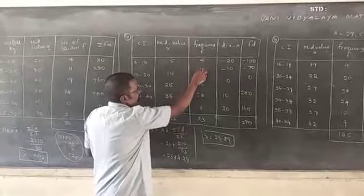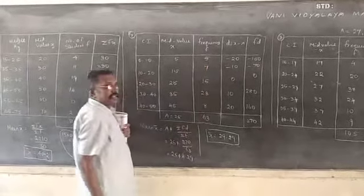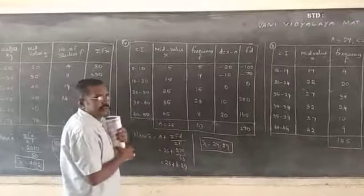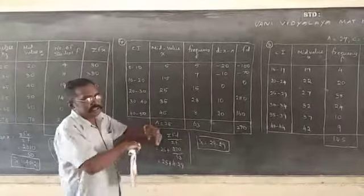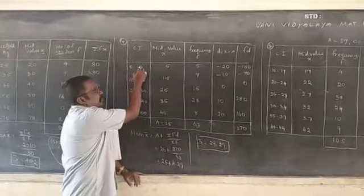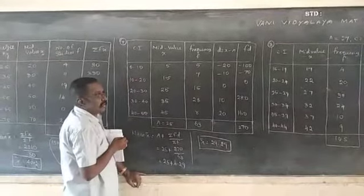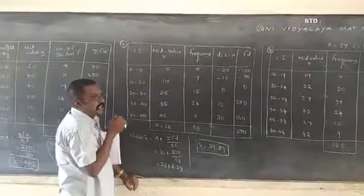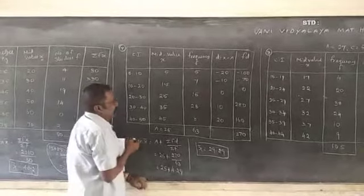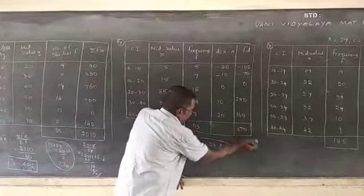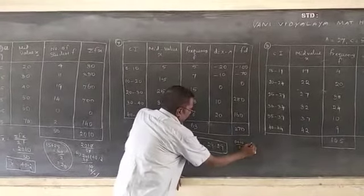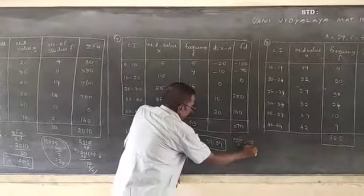Frequency also given. So here, X minus A. The mid value, the mid value equal to what? Mid value equal to, already explained in the above question, previous question, mid value equal to sum of the numbers divided by 2. 0 plus 10, 10 by 2 equal to 5.